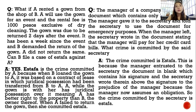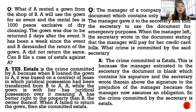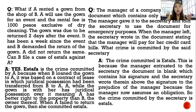In estafa through falsification of a public document, damage is not an element. For example, in a deed of absolute sale, if it is falsified in order to deceive another and commit estafa, it gives rise to the complex crime of estafa through falsification of a public document. Since a deed of absolute sale is a commercial document — which is a public document — and since this is a mala prohibita law, damage is not an element.